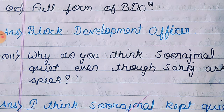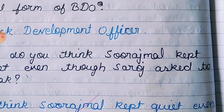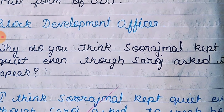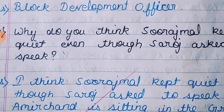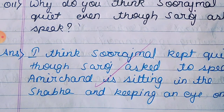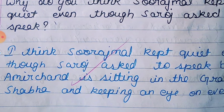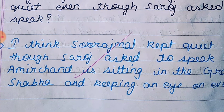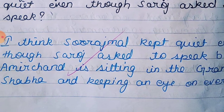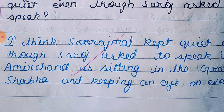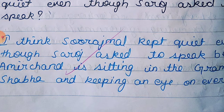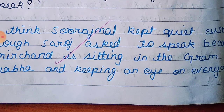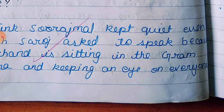Question 11: Why do you think Saroj Mal kept quiet even though Saroj asked to speak? Answer: I think Saroj Mal kept quiet because Amar Chand was sitting in the Gram Sabha and keeping an eye on everyone.